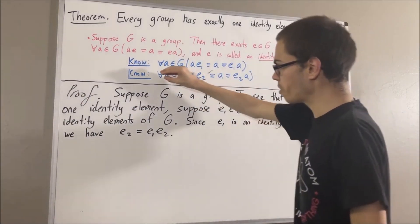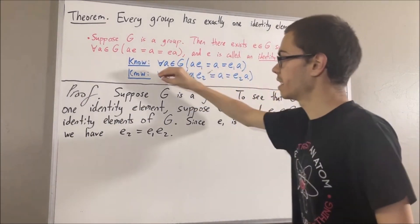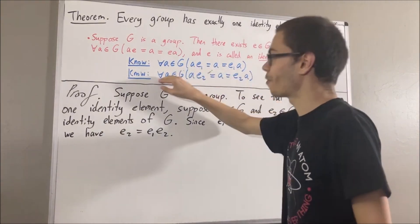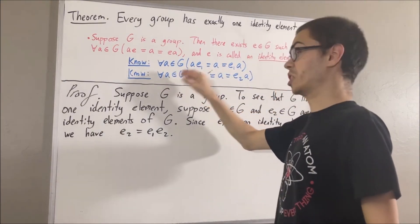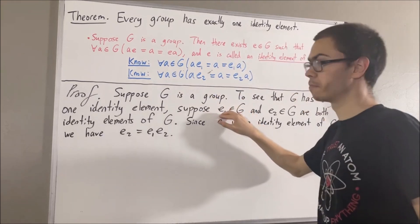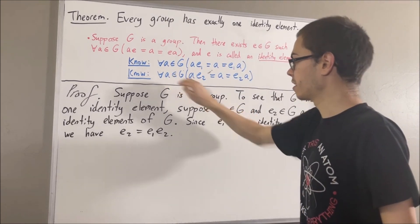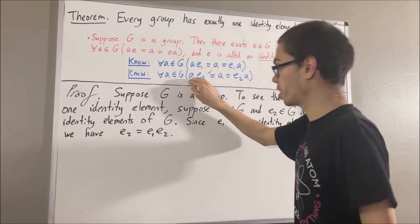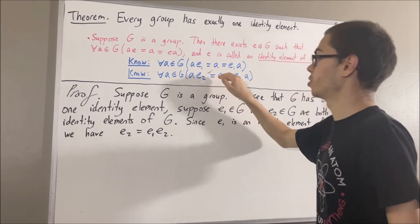Also, we know that this second statement is true. And this second statement works for every element in G. So in particular, it must work for e1. So taking a to be e1, we have that e1 times e2 is equal to e1.